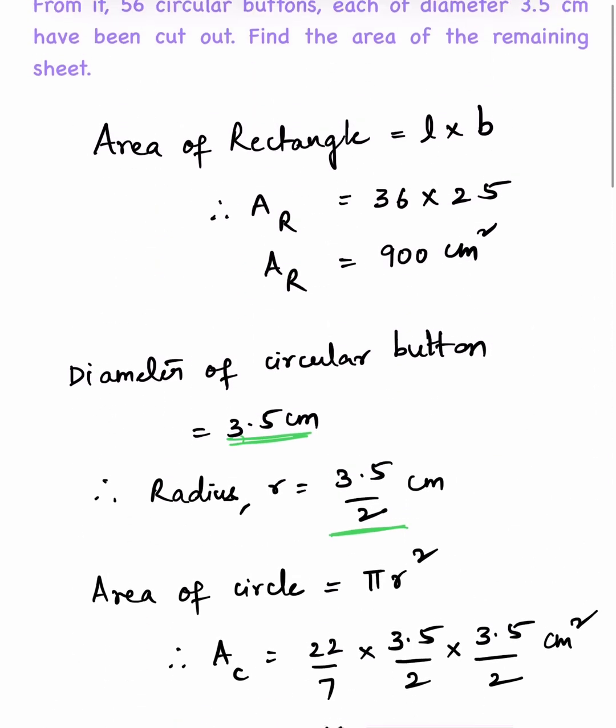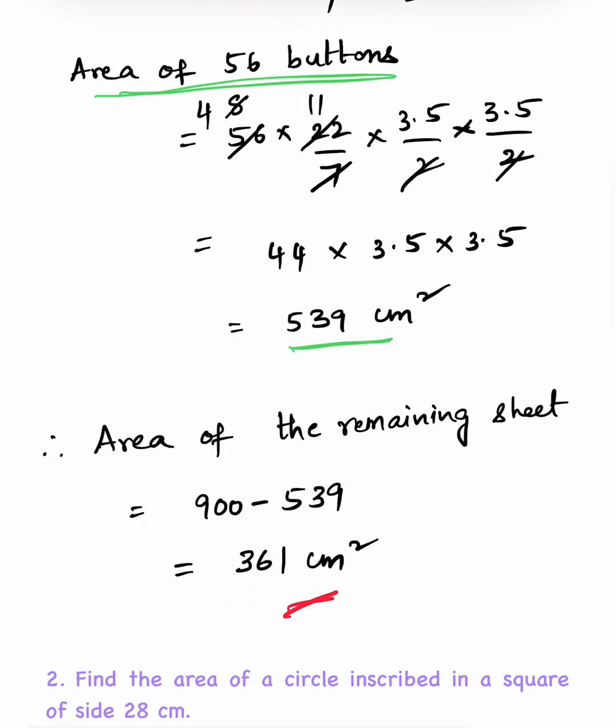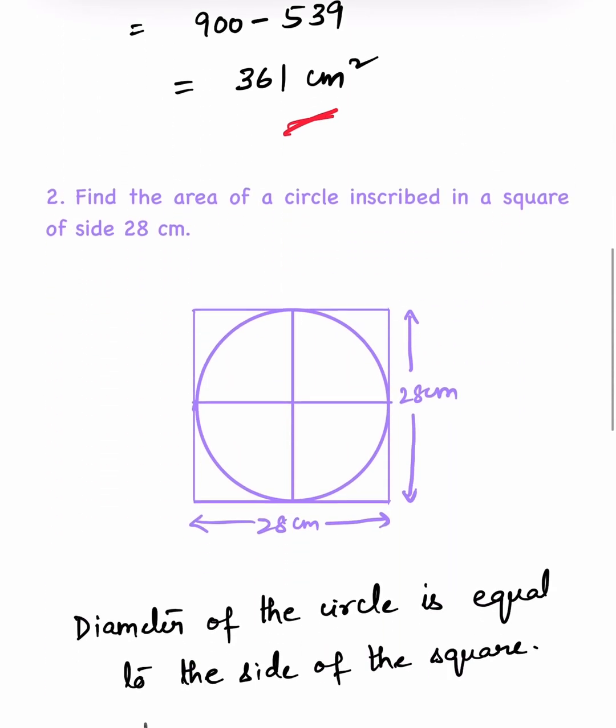And this is the area of rectangle. So area of remaining sheet is area of rectangle minus area of 56 buttons, so that is 900 minus 539, which is equal to 361 cm square.